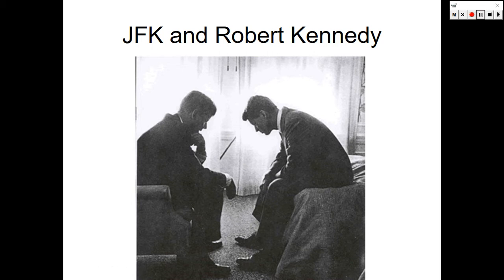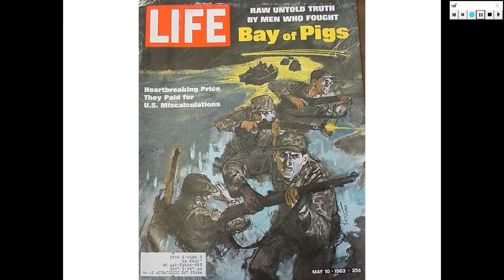Here we have John F. Kennedy and his brother Robert Kennedy, who served as attorney general — a very famous image taken during the Cuban Missile Crisis. This is a cover of Life magazine of the failed Bay of Pigs invasion, an American-backed attempt for Cuban refugees to retake Cuba from Castro. It was backed by the CIA, and the failure was ultimately thrust upon President John F. Kennedy, who took full responsibility for giving the go-ahead on the Bay of Pigs invasion.